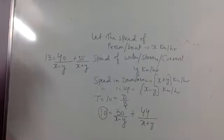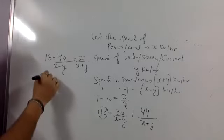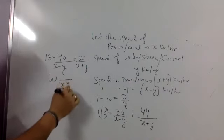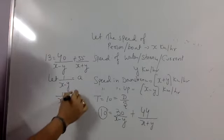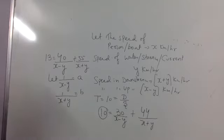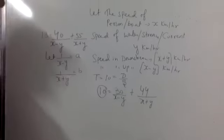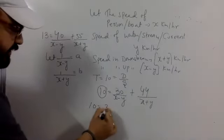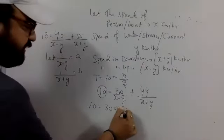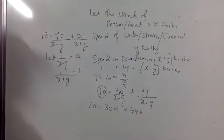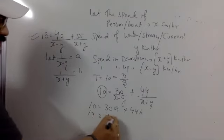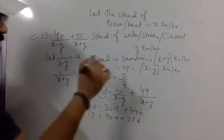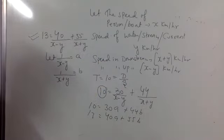And Vanvita dhyan se sunna. Jab bhi x or y denominator mein ho, un mein ek pattern hoga aur hum usko reducible method se karenge. So here let 1 upon x minus y be a and 1 upon x plus y be b. Agreed? So yeh equation after reduction kaisa ho jayega? So can I write 10 is equal to 30a plus 44b? Yes sir. Similarly yeh kaisa ho jayega? 13 is equal to 40a plus 55b? Yes sir. Do we know elimination method?